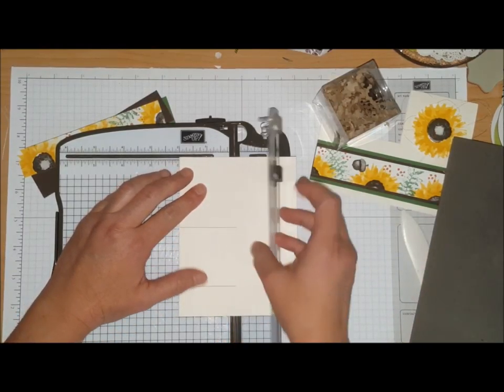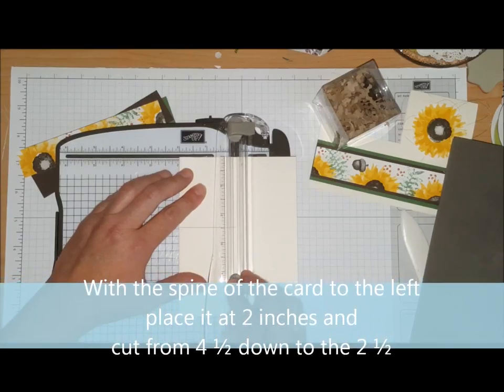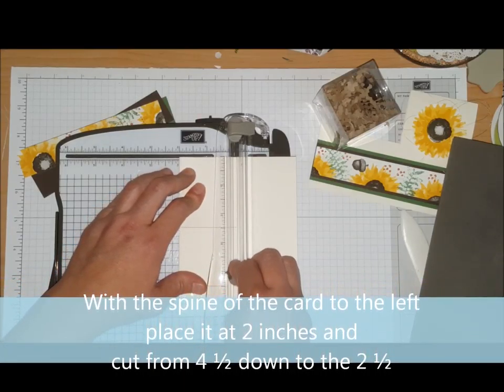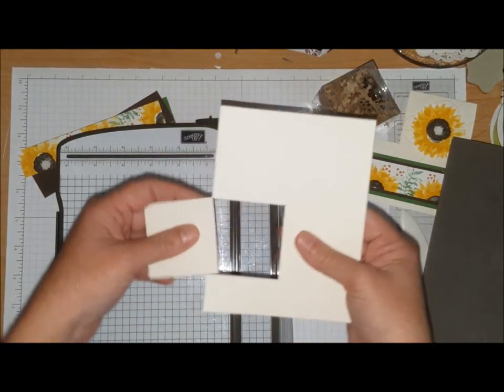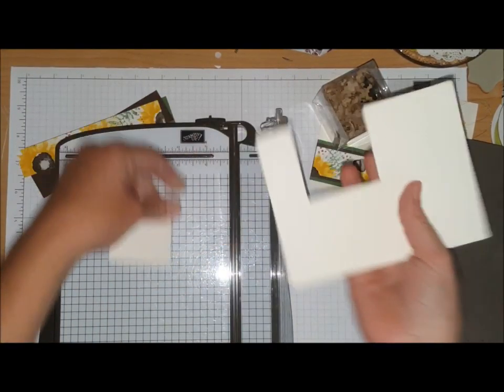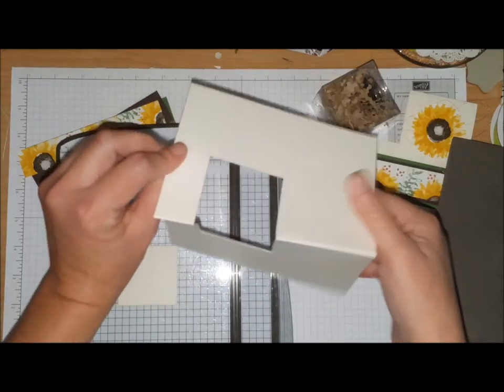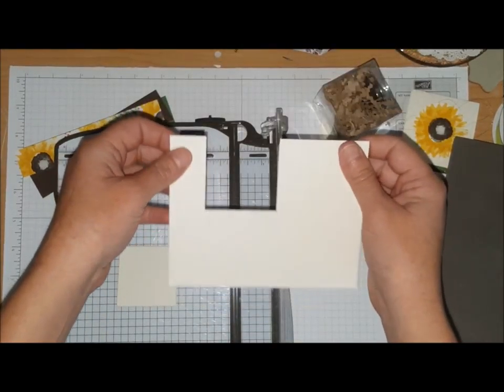I'm now going to flip my paper and at the two inches I'm going to bring it to the four and a half inch mark and slice up to the two and a half inch mark. That's going to cut away that little box piece that you need for your box.